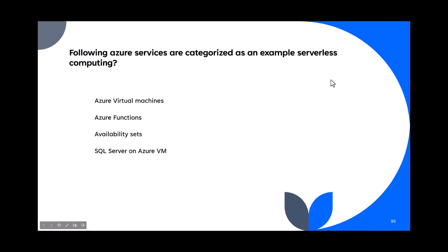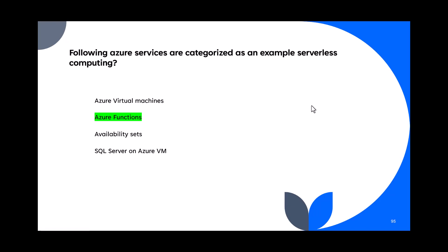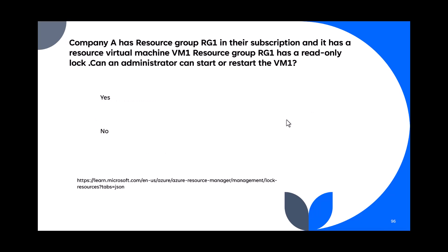Question 95: Which Azure service is categorized as serverless computing? Options: Azure Virtual Machine (IaaS), Azure Function, availability set, SQL Server on Azure VM. Virtual machine is IaaS — it is a server. Availability set also requires VMs behind the scenes. SQL Server on Azure VM is not serverless. The answer is Azure Functions — that is serverless computing.